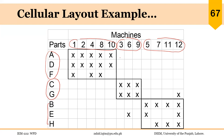All processes for part family one — parts A, D, and F — can be done in cell one. However, part G in cell two has one operation that cannot be performed in that cell: the operation on machine twelve, which belongs to cell three. Similarly, one part in family three — part E — requires an operation on machine six, which cannot be performed within cell three.